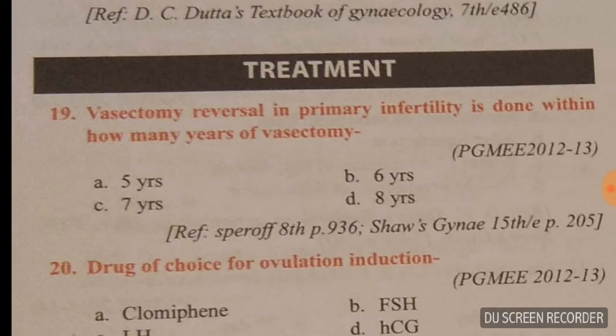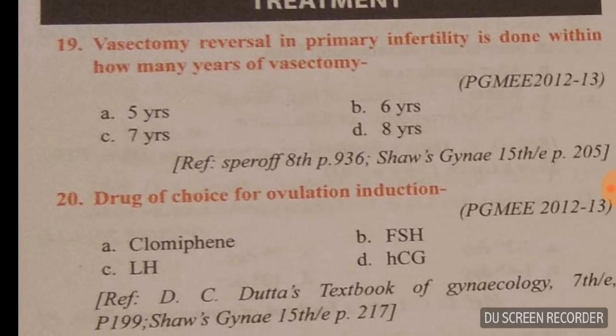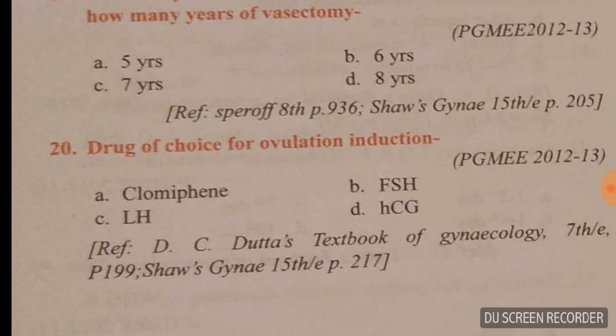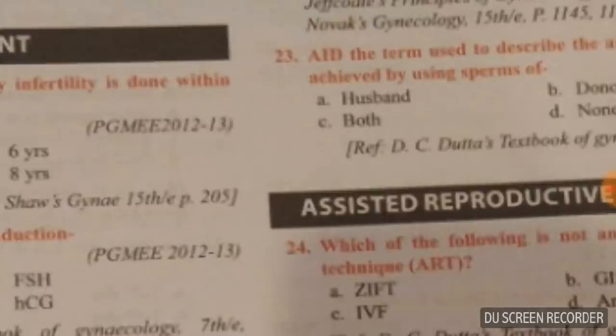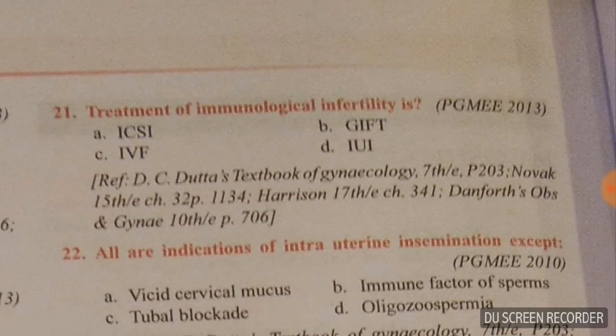Question nineteen: vasectomy reversal in primary infertility is done within five years of vasectomy — option A is right. Question twenty: drug of choice for ovulation induction is clomiphene citrate — clomiphene is the answer.